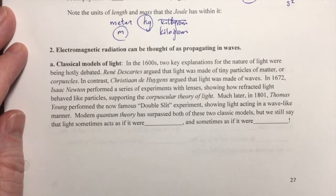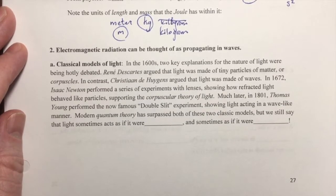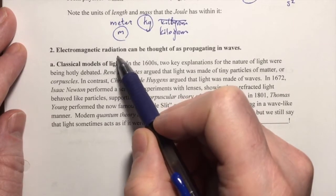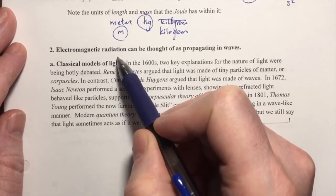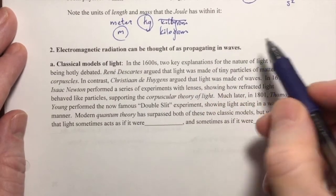I'd like to share some ideas on particles and waves. Electromagnetic radiation, of which visible light is one type, can be thought of as propagating in waves.